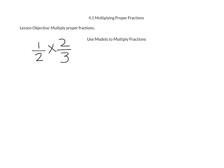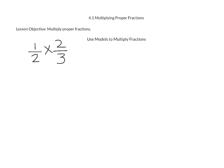Now when we multiply fractions, start thinking of the multiplication symbol as the same thing as the word 'of.' So when we are thinking of one half times two thirds, what we are really doing is finding one half of two thirds.